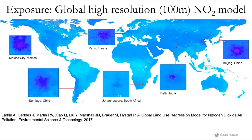To characterize nitrogen dioxide at a very fine spatial scale everywhere around the world — as required for a global disease burden assessment — high-resolution estimates of NO2 globally are needed. Until recently this was not possible, due to very sparse nitrogen dioxide monitoring. However, through a combination of satellite-based estimates, land use information, and available measurements, an analysis led by Andrew Larkin and Perry Hystad at Oregon State University, published in 2017, provided the first global high-resolution surface of nitrogen dioxide concentrations.